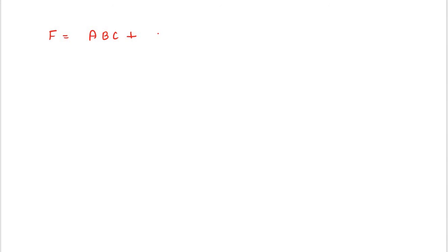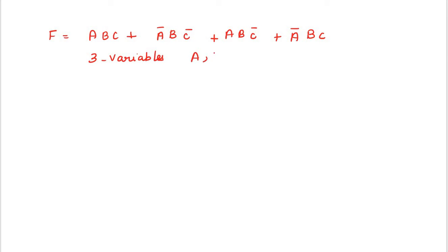Next, for the same logical expression, I am going to reduce it using K-map. The expression is ABC + A'BC' + AB'C' + A'BC. Each term consists of 3 variables: A, B, C. So there are 2³ = 8 cells in the K-map. I have to draw 8 cells. Here A, and here B and C. BC values follow the Gray code order: 00, 01, 11, 10. A takes values 0 and 1.